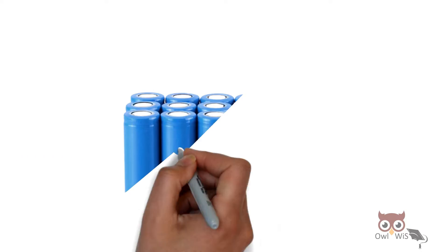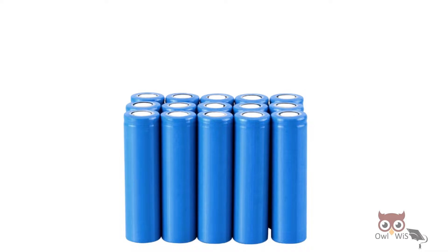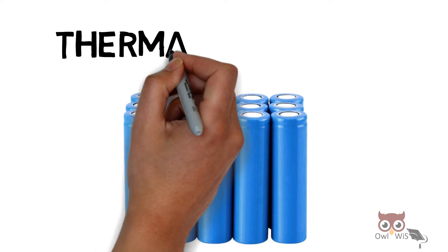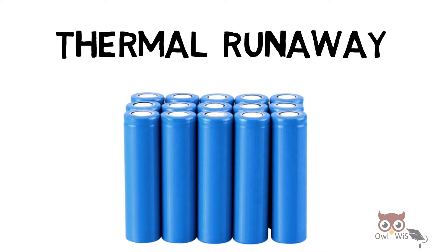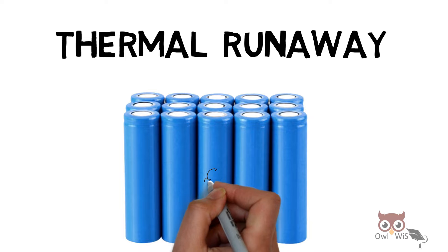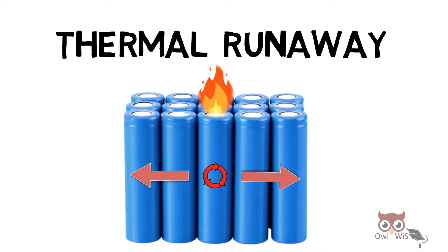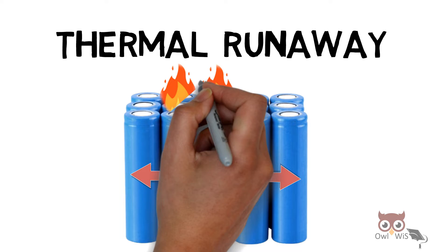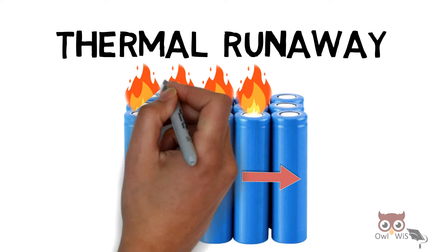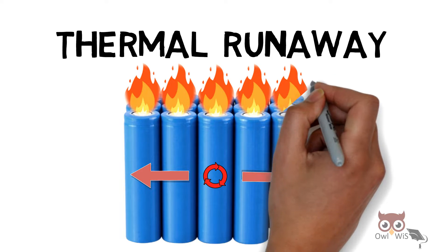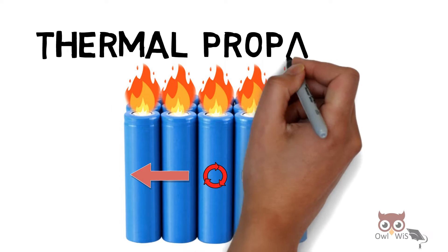This results in the battery undergoing thermal runaway, which begins with a single cell of the battery getting heated up and breaking into fire, which then slowly propagates to the remaining cells of the battery, consuming the entire battery slowly — known as thermal propagation.